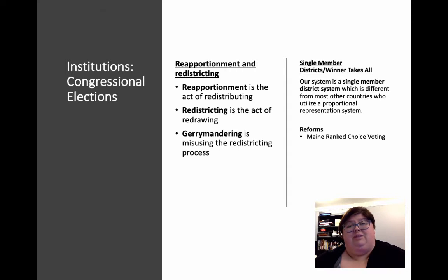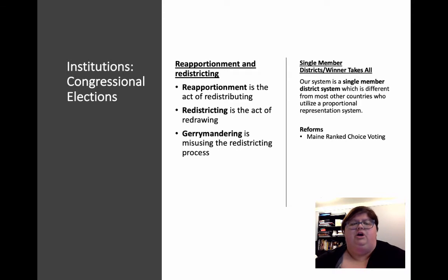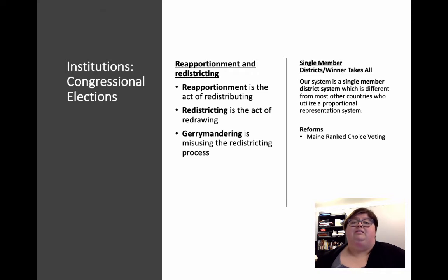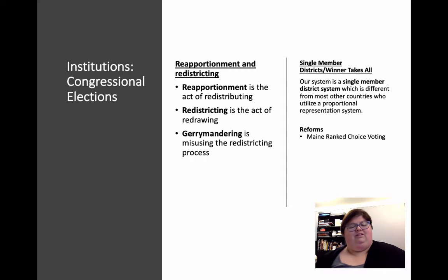Another facet of our congressional election system is that we have what is called single-member districts — it's a winner-takes-all system, different from most other countries in that there's no proportional representation at all in our national legislature. Proportional representation would mean if a party won 51% of the popular vote across the country, they would have 51% of the delegates to that body. We don't have that. This means one party might win 60% or more of the total votes across the nation, but because every district stands alone, they might actually have a minority in the House of Representatives.